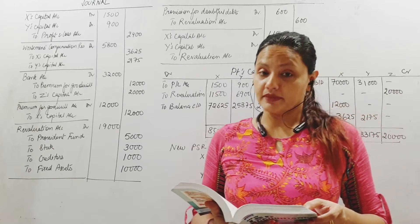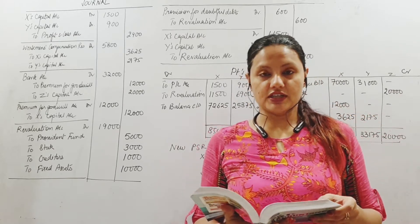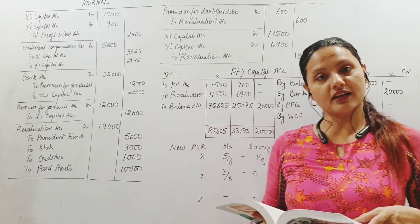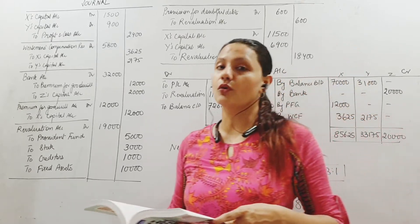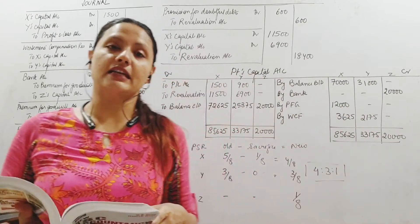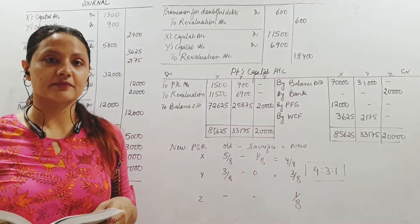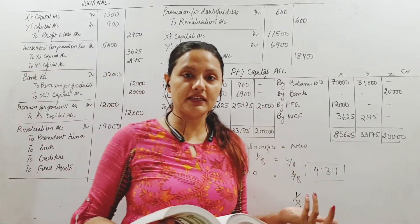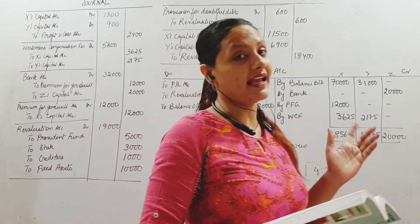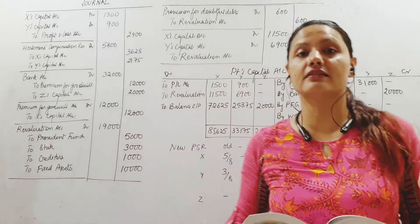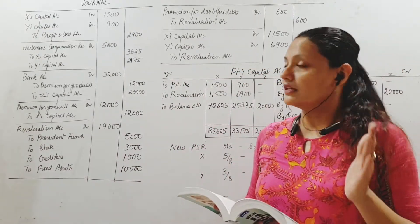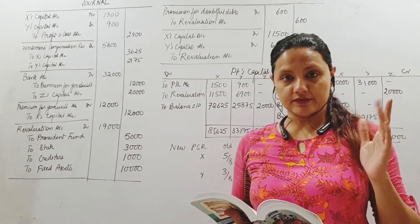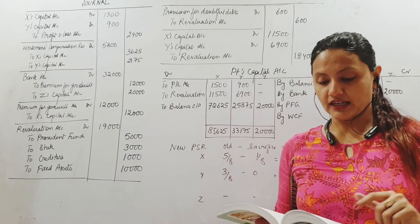Then we have workman's compensation reserve. If you have read through the sum, there is no adjustment given regarding WCR. Therefore, there is no liability against it. Hence, it's a free reserve to be distributed, and we will pass an entry for that. That is entry number one.